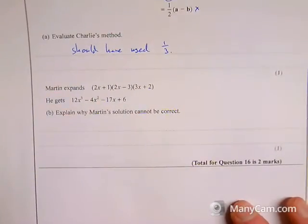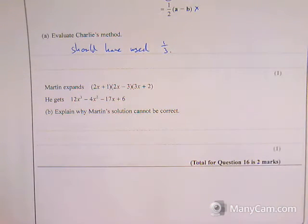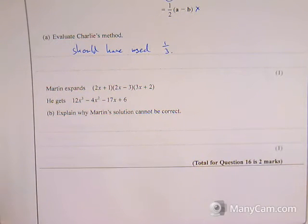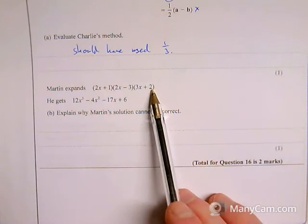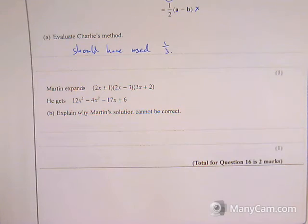The second part of this question is about expanding triple brackets. It gives you the brackets, the answer he gets, and asks you to explain why his solution can't be correct. There's two ways to do this. You can either expand out these brackets fully and simplify it, show that it's a different answer to what Martin got, and that would get you the mark.